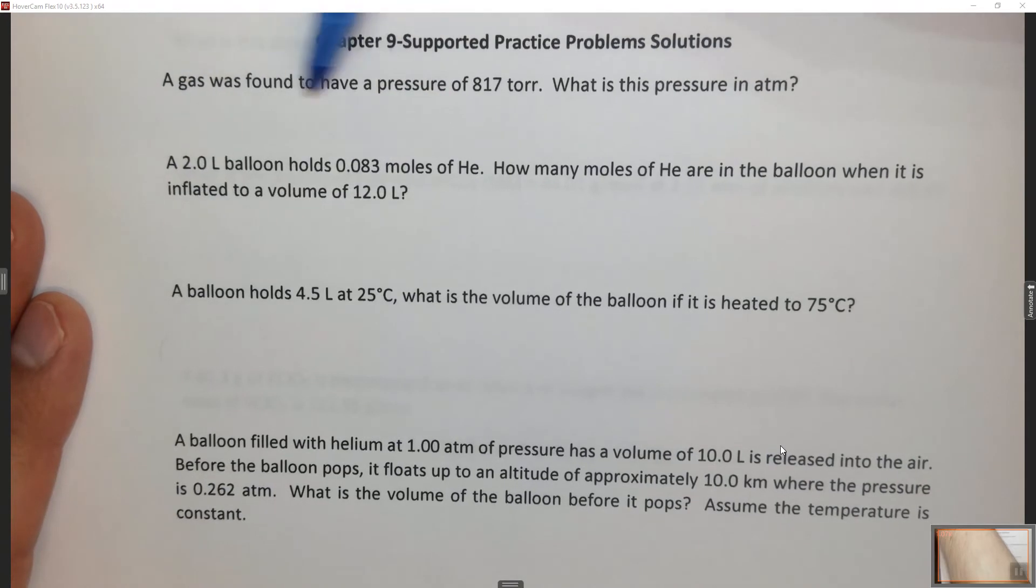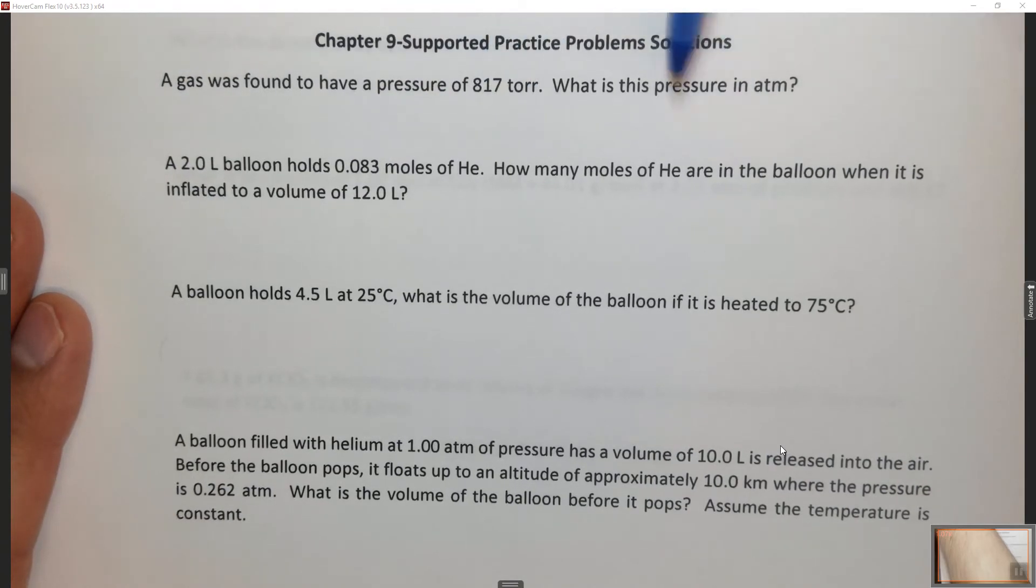The question says, a gas was found to have a pressure of 817 torr. What is this pressure in atmospheres?